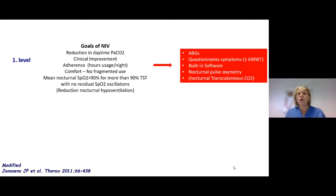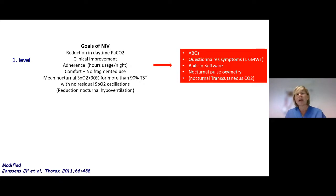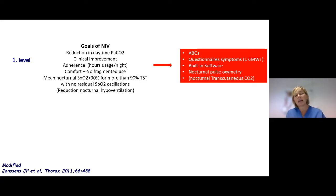What is the first level of monitoring? Non-invasive ventilation depends on what we consider the primary goals. The primary aims are: first, reduction of daytime pCO2; clinical improvement; improvement of adherence and comfort; improvement of nocturnal oxygen saturation; and — in brackets, which I will explain — reduction of nocturnal hypoventilation.